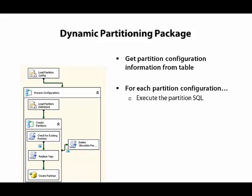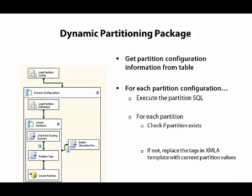In each loop, the first step is to execute the SQL for the partition. That returns a result set with partition ID, partition name, WHERE clause, and slice ID. Then we start another loop for each of these partitions defined in the result set. In that loop, we first check to see if the partition for the current iteration is already in the cube — if it is, we don't want to create it again. But if it's not there, then we use a script task to take the XMLA script template and use a replace function to update the placeholder tokens with the values for the current partition, and then we execute the resulting XMLA script as part of a DDL task.